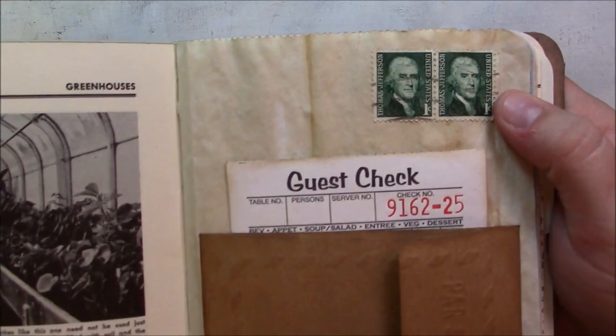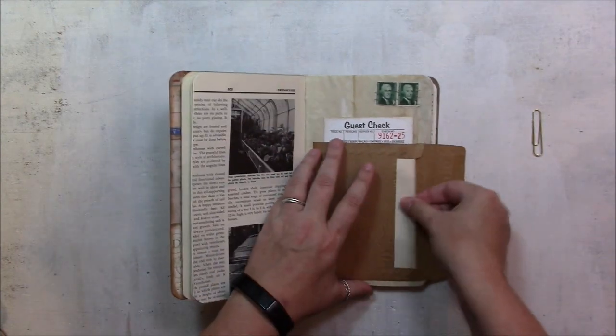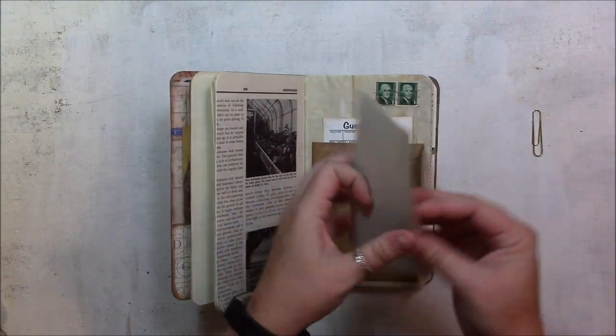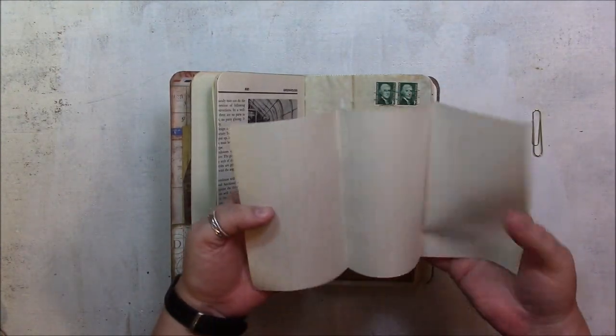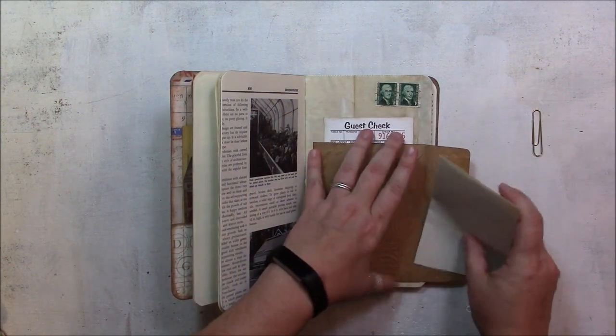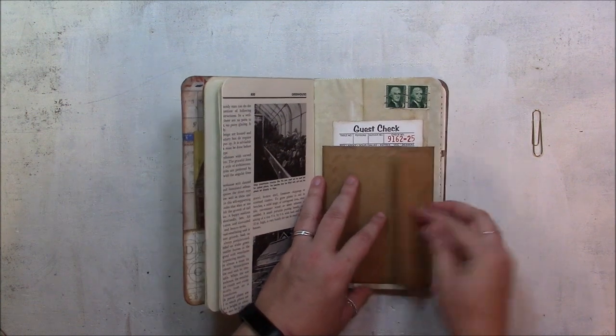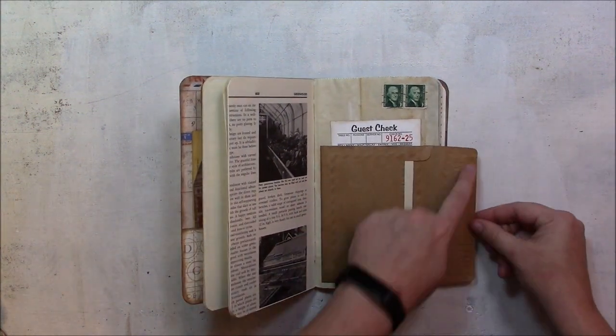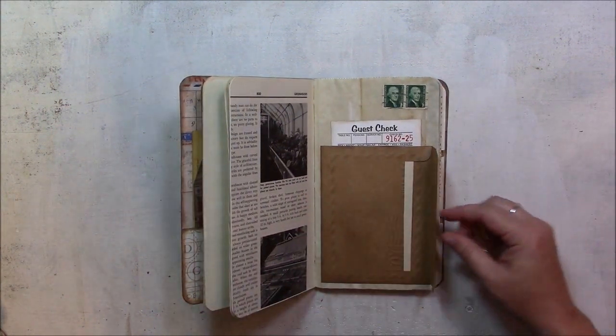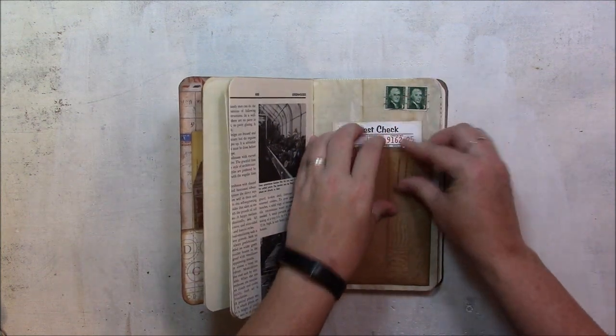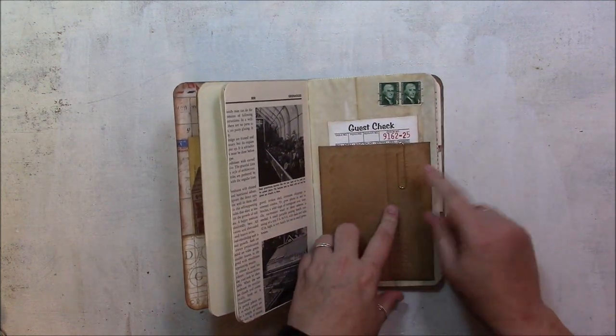And then I attached two stamps, and inside the envelope is just some lined notebook paper for journaling, or whatever you would like to use it for. Certainly take it out of there and put whatever you like inside there. And I didn't want to seal the flap, so I'm just using a paper clip to hold it close. Plus, it's pretty.